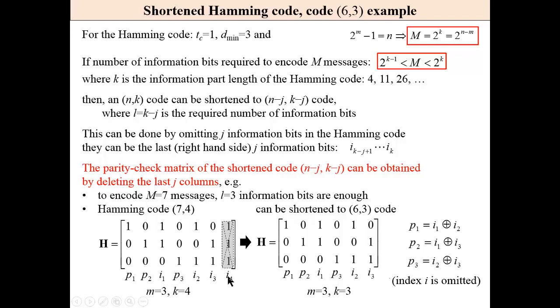There is no fourth information bit, no last column in this matrix of the full regular Hamming code. This is the matrix of the shortened code and corresponding parity check equations.